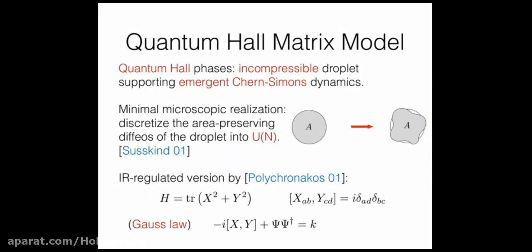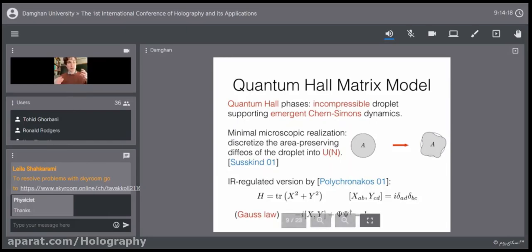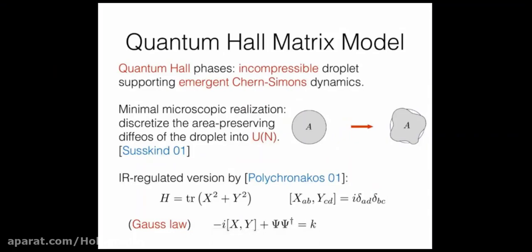Susskind wrote down a version that only worked for an infinite plane. Polychronakos showed how to put it on a droplet. The theory is very simple: there are two matrices X and Y; the Hamiltonian is just tr(X² + Y²), which is a trapping potential. X and Y are canonically conjugate quantum mechanically — that's the remnant of the magnetic field, since strong magnetic fields make X and Y not commute. Finally, there's the U(N) symmetry, a Gauss law: X and Y are the generators of SU(N), and the whole system must have SU(N) charge k.